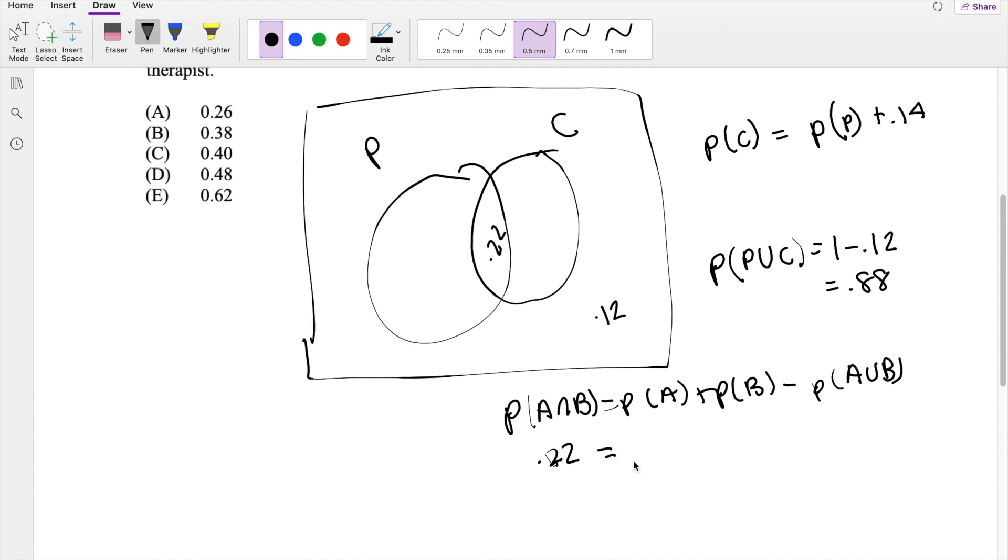We know that the intersection P and C is equal to 0.22. This is equal to probability of physical therapist plus the probability of chiropractor minus the probability of P union C. P union C is equal to 0.88, so we know this to be 0.88.